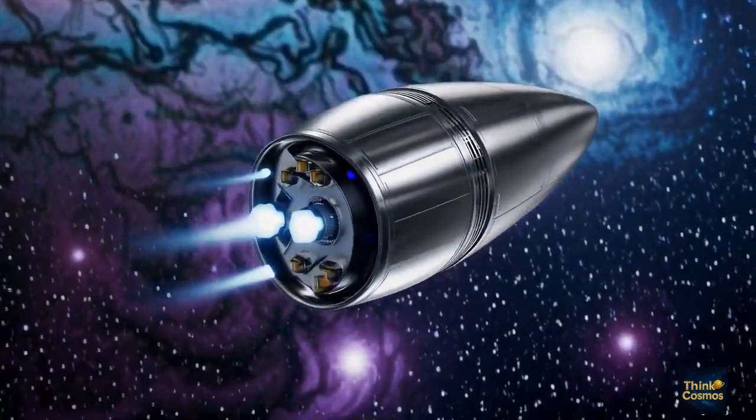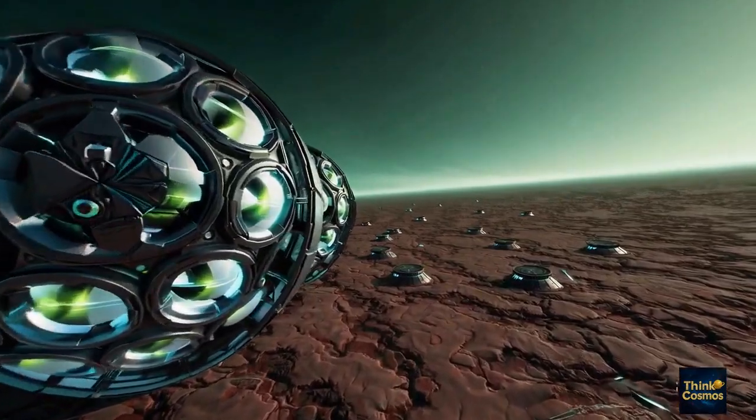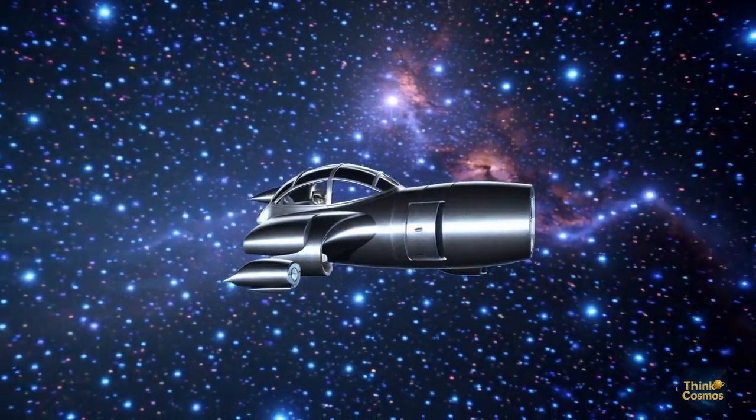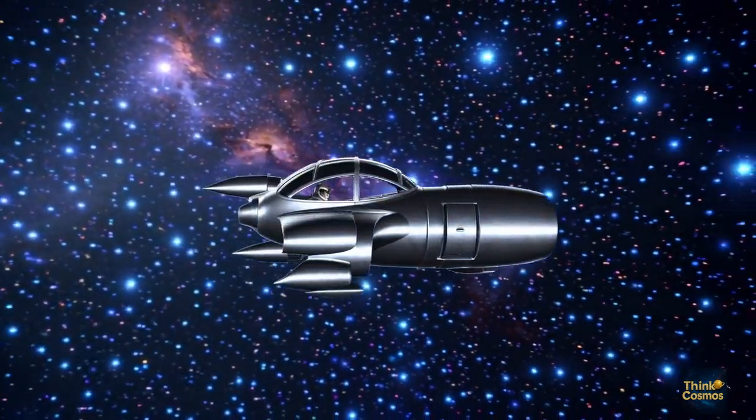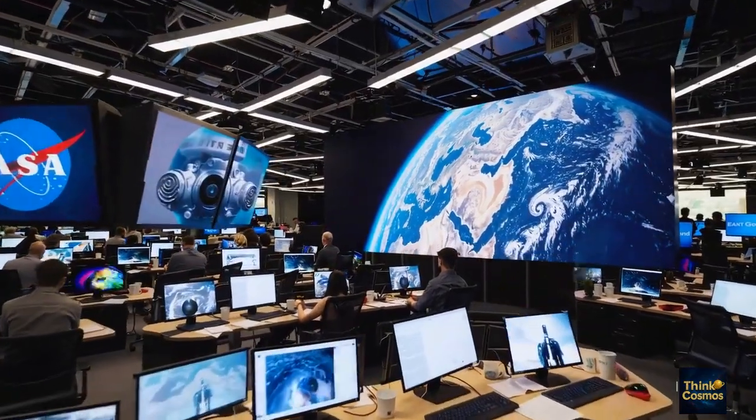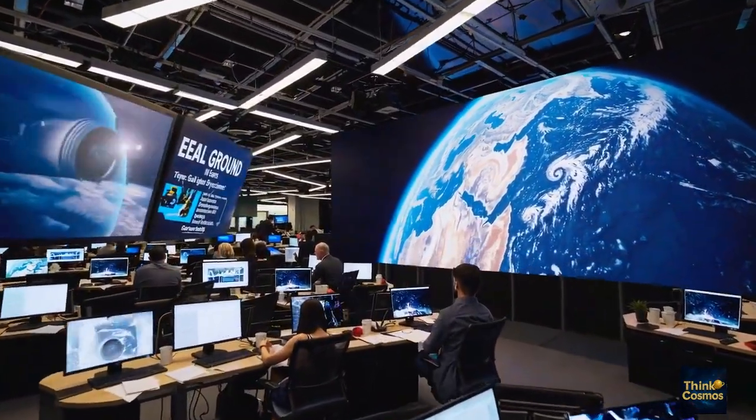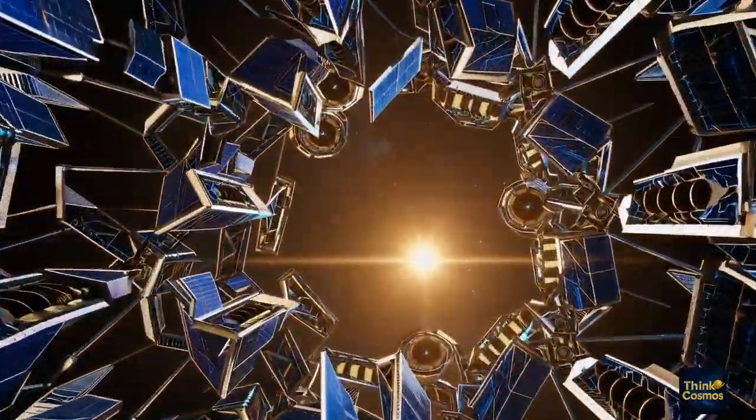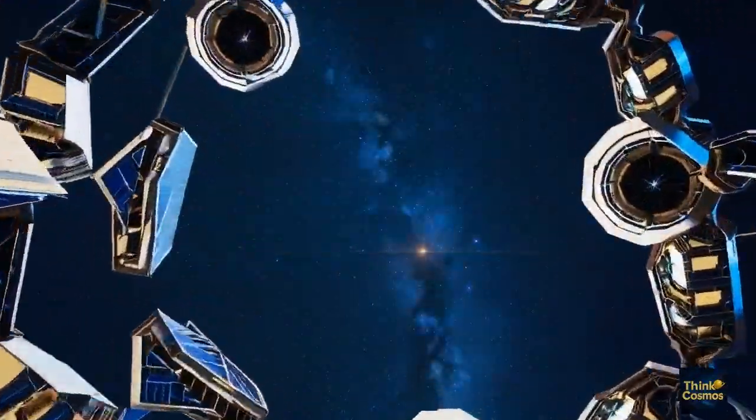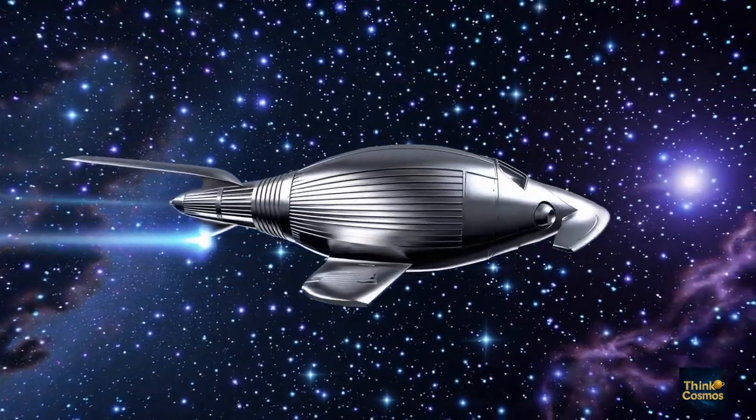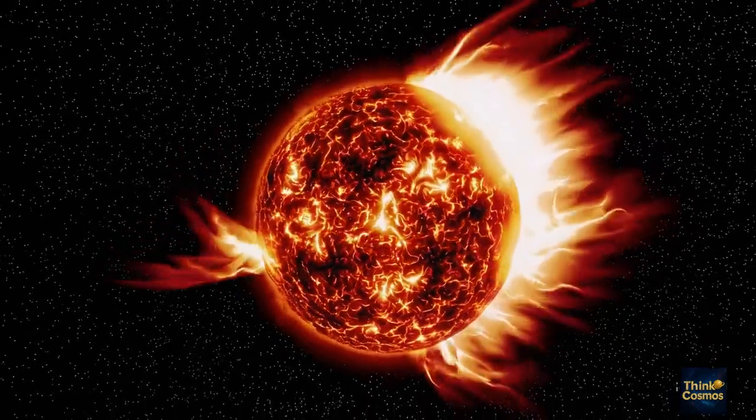This blue light is what the telescope captures. In the case of KM3-230213A, that flash of Cherenkov radiation was unusually bright and clean. It traced the path of a muon whose energy was estimated to be 120 PeV, implying that the original neutrino must have carried 220 PeV when it collided with a nucleus in the sea. It wasn't just energetic, it was surgical in its track.